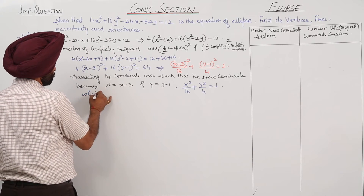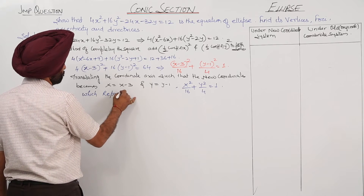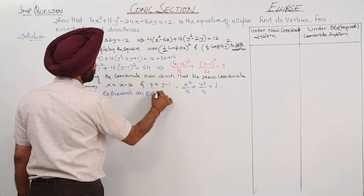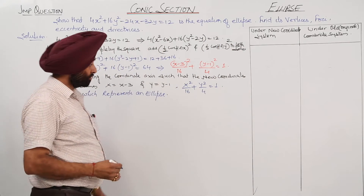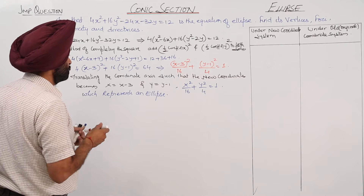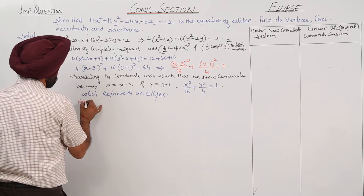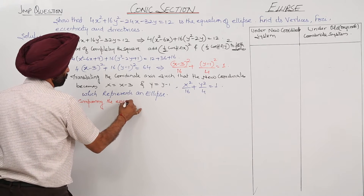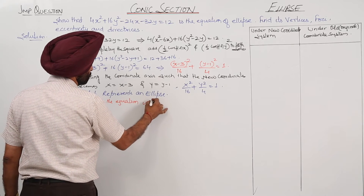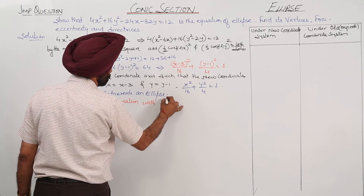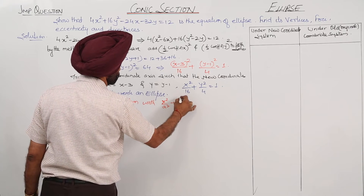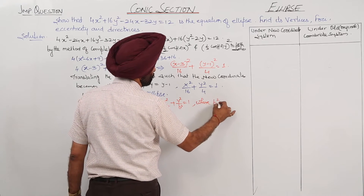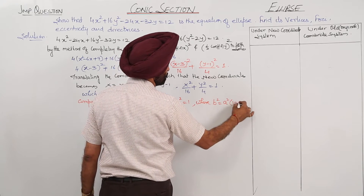This represents an ellipse. So the first thing we've confirmed is that the equation is that of an ellipse. Now, comparing the equation with x²/a² + y²/b² = 1, where b² = a²(1 − e²).